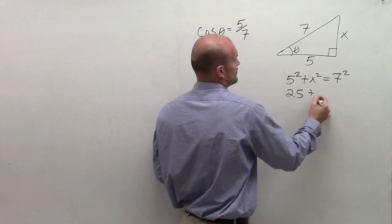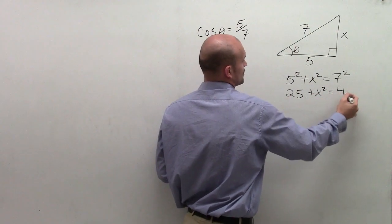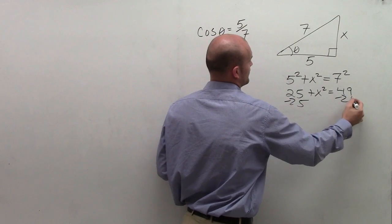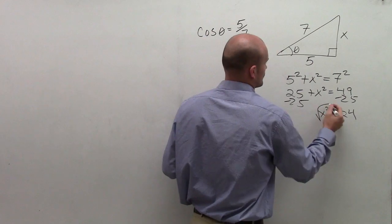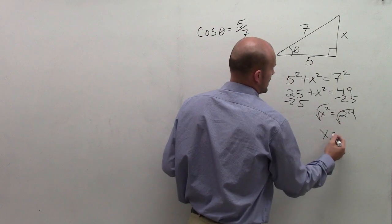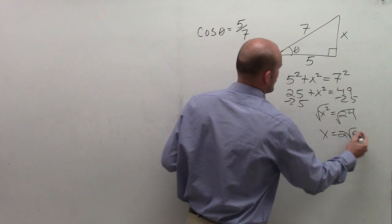So I have 25 plus x squared equals 49, subtract 25, x squared equals 24, square root both sides, x equals 2 radical 6.